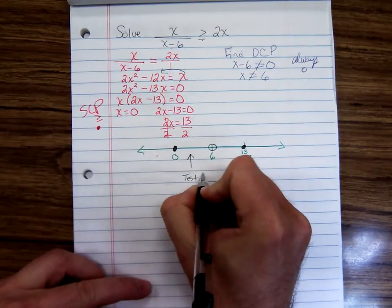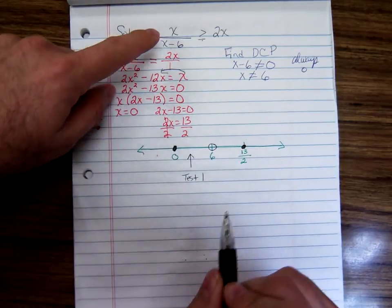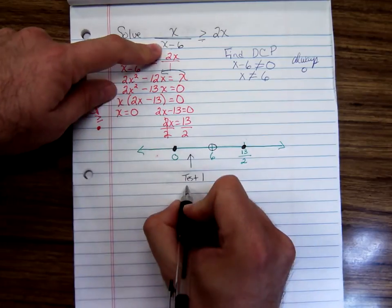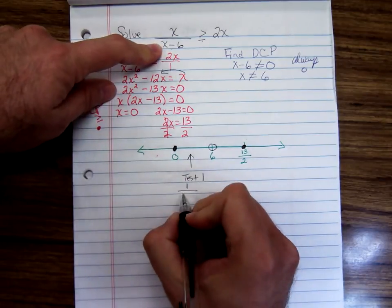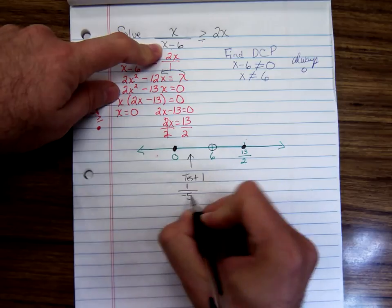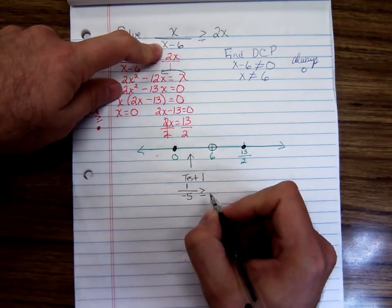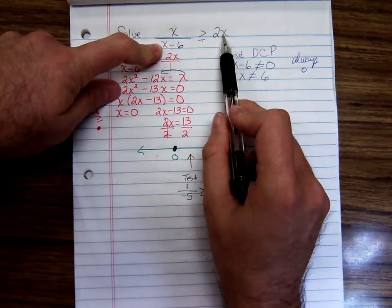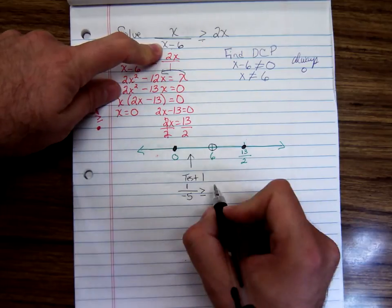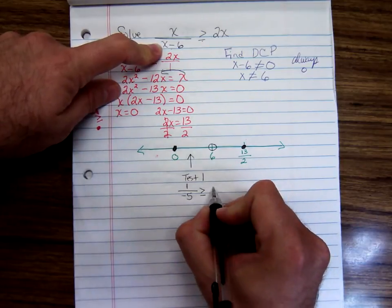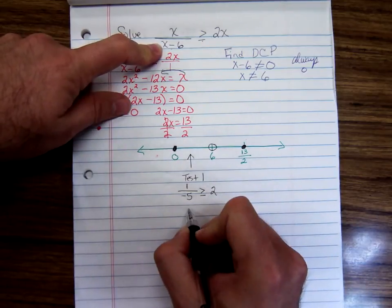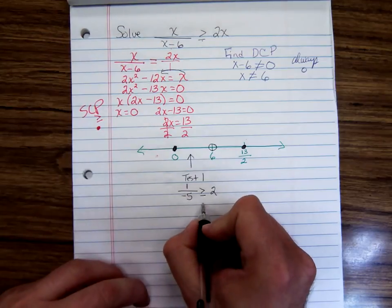Test 1. When I do this testing, I put it in the original problem. We'd have 1 over, 1 minus 6 is negative 5, is greater than or equal to 2 times 1 is 2. So we have negative 1 fifth is greater than 2. That's going to be false.